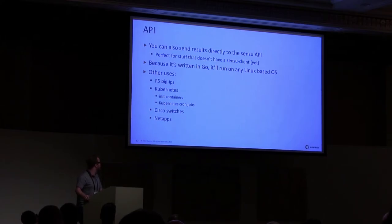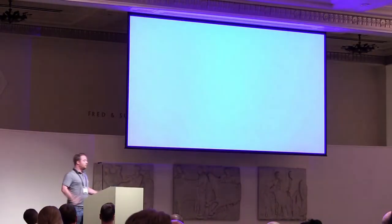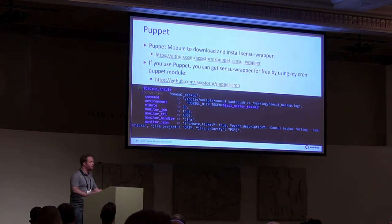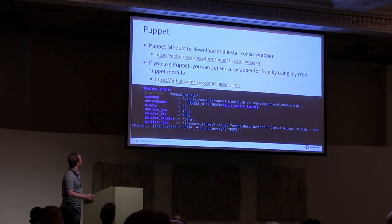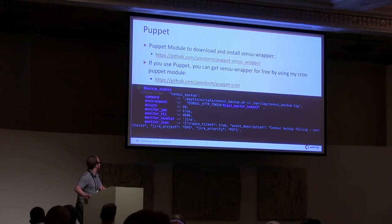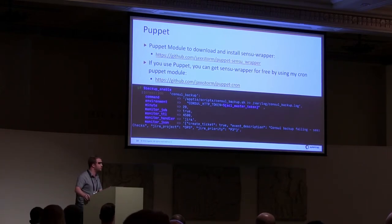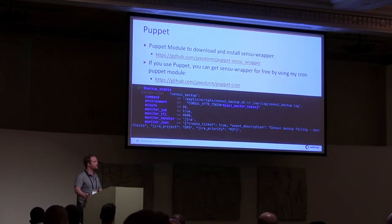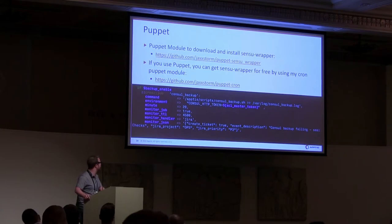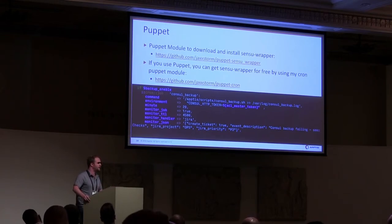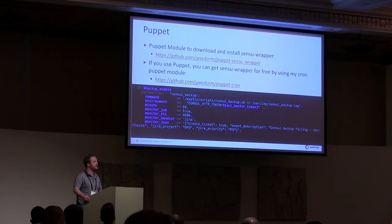Rewriting it in Go turned out to be a pretty good decision. Once you've installed it, you get some additional tooling. There's a Puppet module to install it — if you're using Puppet, you can install it really easily using the Puppet Sensu Wrapper module. If you want to start monitoring cron jobs, which is our main usage for this tool, you can use this cron module and add a couple of parameters like monitor_job and monitor_TTL, and you basically get monitoring for free. We now have all of our cron jobs under /etc/cron.d, and we purge that directory with Puppet. This stops people adding random cron jobs to update their IRC bouncer or something. Everything is managed by Puppet, and you can add all the other Sensu Wrapper options like the handler, the TTL, and the name.